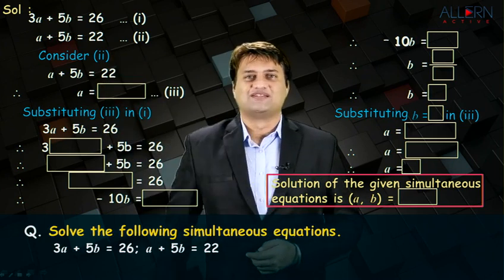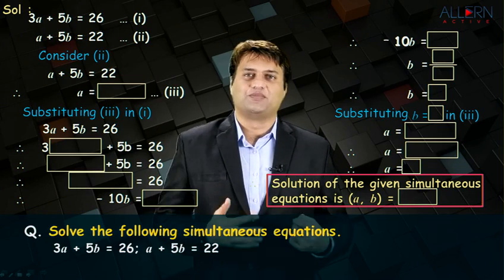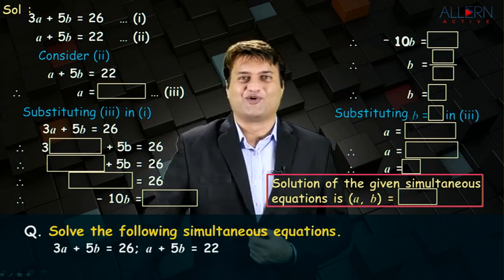The first equation is 3a plus 5b is equal to 26. The second equation is a plus 5b is equal to 22. Both the equations are already numbered.